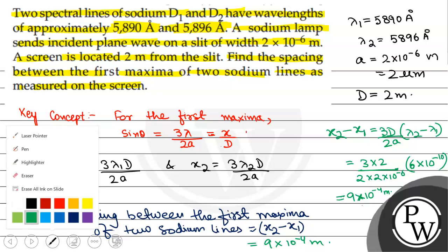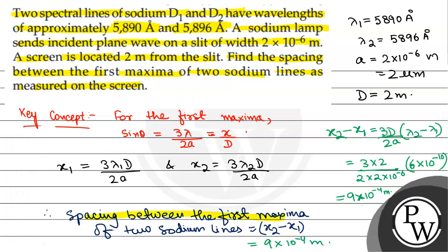The final answer: the spacing between the first maxima of two sodium lines is 9×10^-4 meters. Hope you learned in detail. Best of luck.